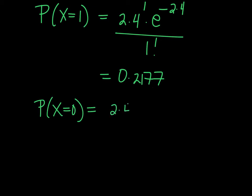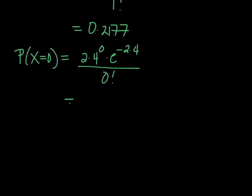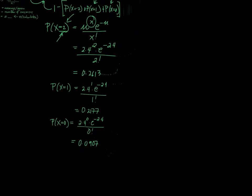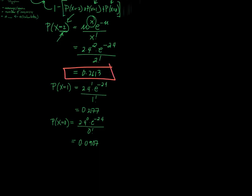For P(X = 0), you have 2.4 raised to zero, times e to the negative 2.4, divided by zero factorial. Since 2.4 to the zero is 1 and zero factorial is 1, just change the exponent to zero and compute. This equals 0.0907. So now we have P(X = 2), P(X = 1), and P(X = 0) ready to sum.